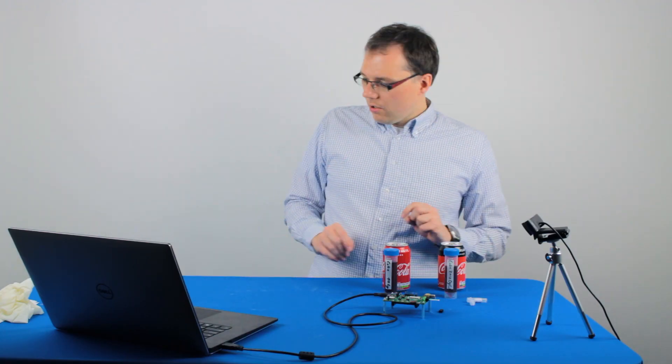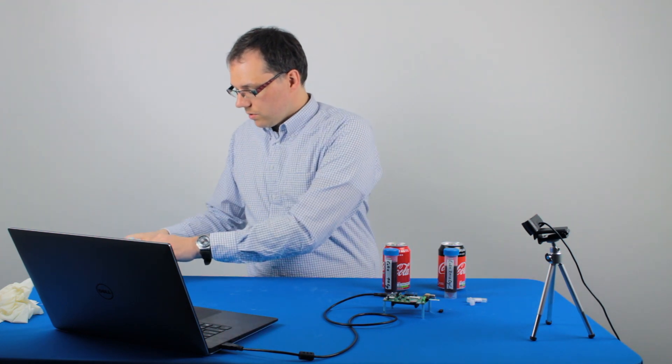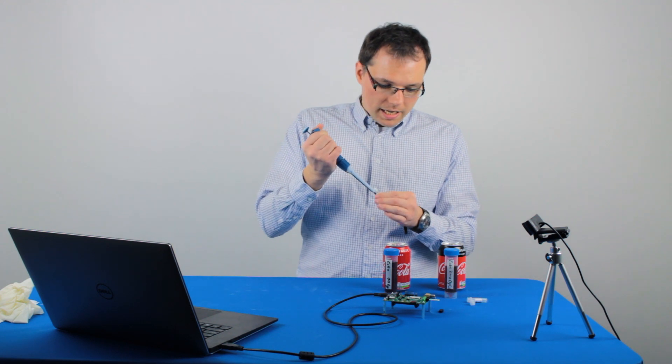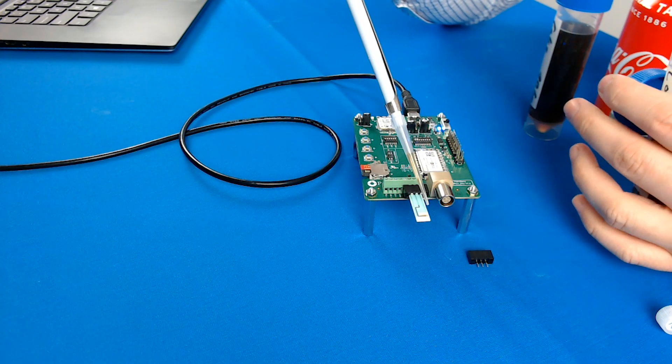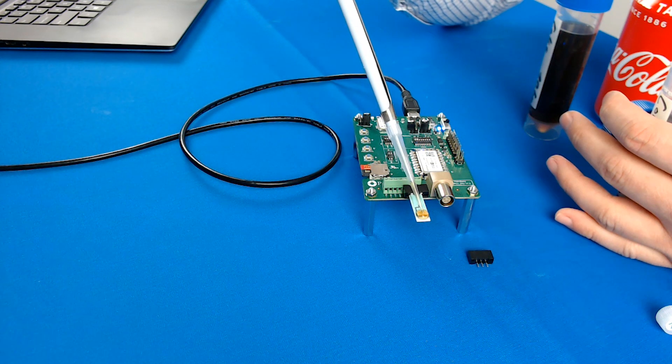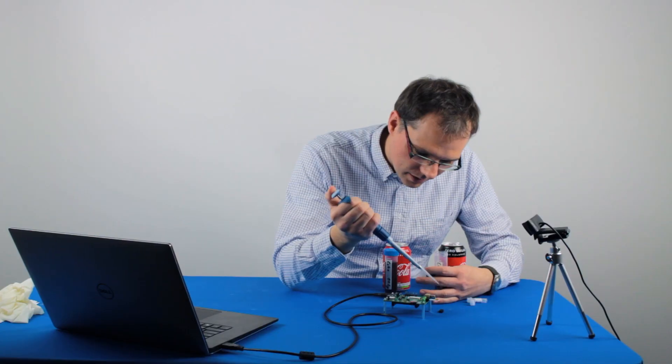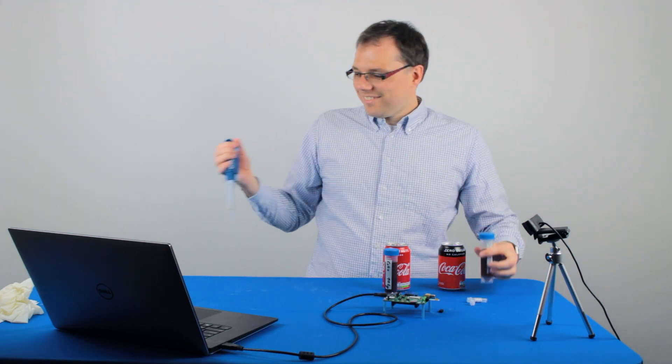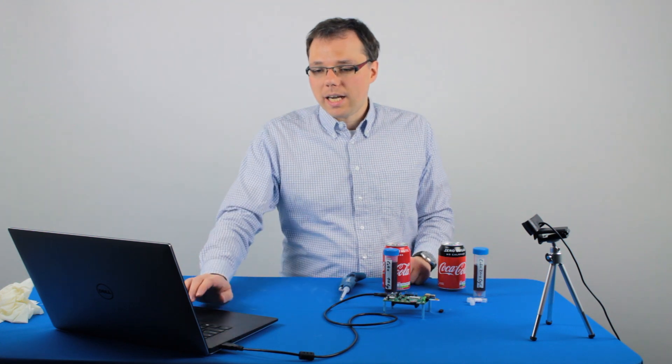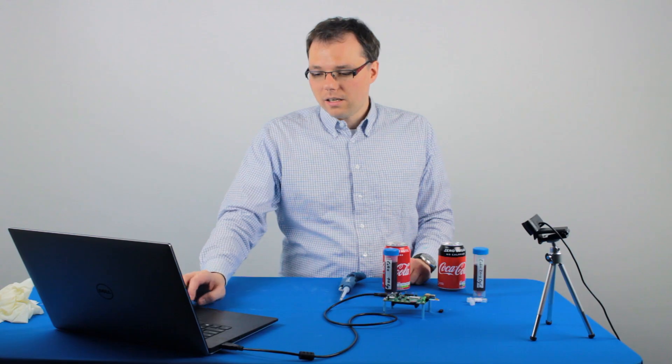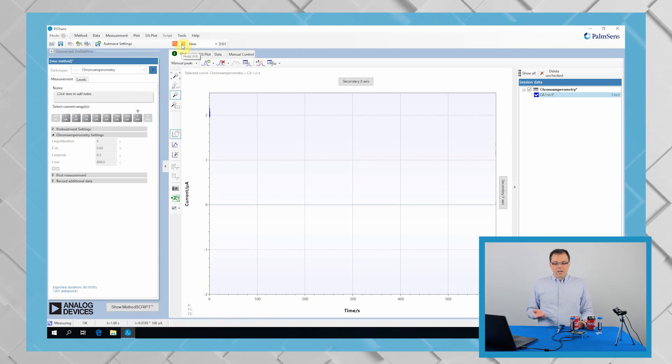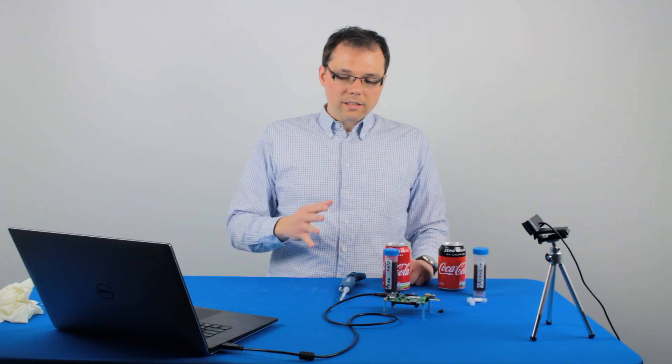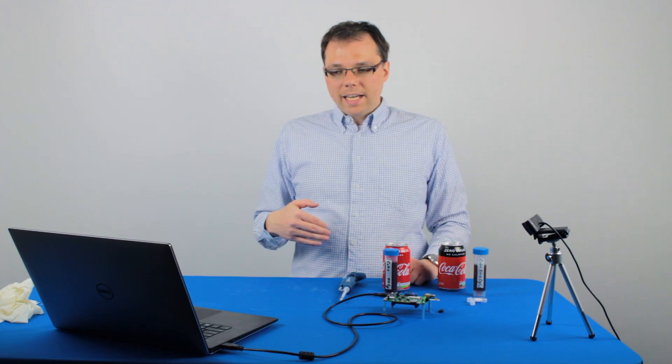Then we are going to apply 100 microliters of the Coke Zero, the sugar-free Coke. When you do that, you should take care that all three electrodes are covered with the Coke - the silver ones and the carbon one. Now we have covered the electrodes and set all our parameters, so we can start our measurement.